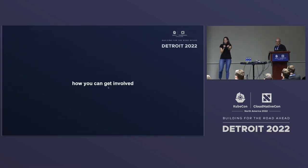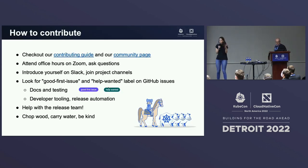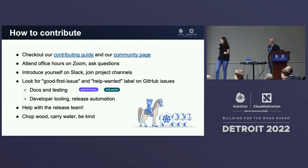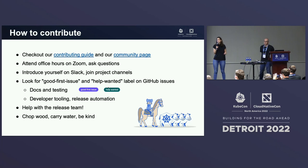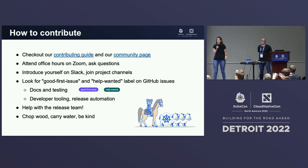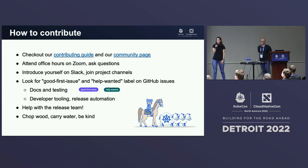How can you get involved? A few standard recommendations: read our contributing guide, attend office hours, look for good-first issues and help-wanted labels, help improve docs and testing, and contribute to developer tooling. But really, if there's one single thing to take away: just show up. Introduce yourself. Turn the camera on. Say hi. We're all people and we all want to help. Sometimes it can feel like everyone is talking about stuff way above your head, but there are 20 other people in the room asking themselves the exact same question. Be the person that raises their hand. Go to Kubernetes Slack and just say hi in the channel of the project you're interested in — whether that's Cluster API, KubeADM, Image Builder, or any of them. Introduce yourself, tell us why you're here and what interests you.